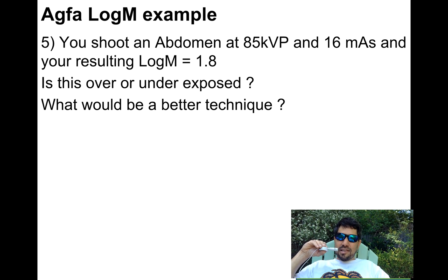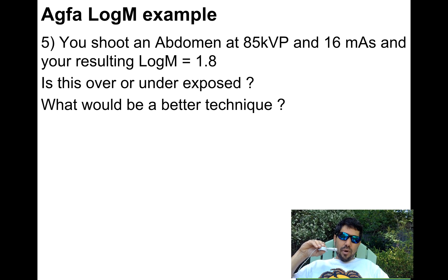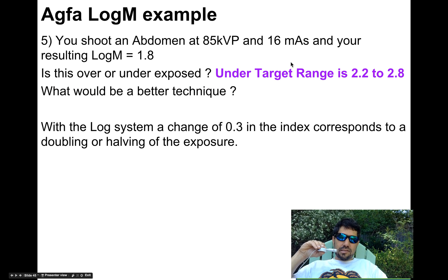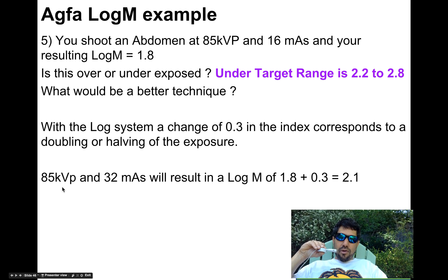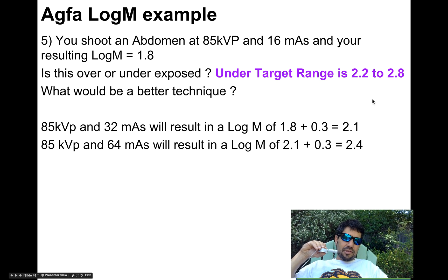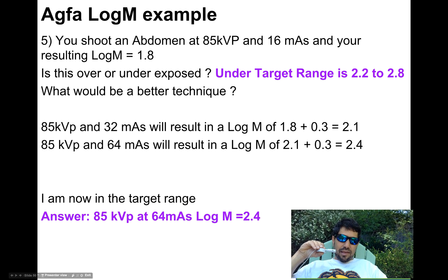You shoot an abdomen at 85 kVp and 16 mAs; your log median is 1.8. Is it over or under? The range is 2.2 to 2.8, and we're under the range. Although we're logarithmic, we're proportional, so a low number means low dose — I need to increase my dose. I'll double the mAs to 32. Doubling the mAs adds 0.3 to the log median, bringing me from 1.8 to 2.1. Not yet in range. I'll double the mAs again to 64 mAs — that adds another 0.3, giving a log median of 2.4. That's close enough to the perfect 2.5 and well above the half-dose mottling threshold.